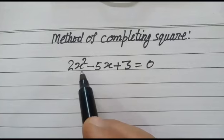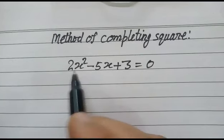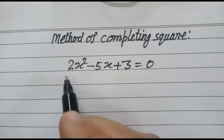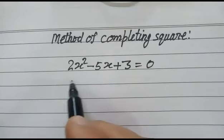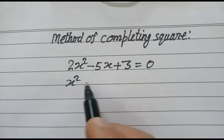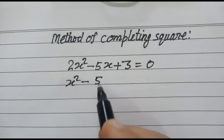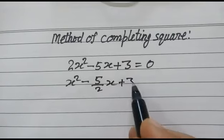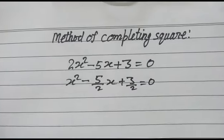As we know, 2x² is not a complete square. First, we will try to make it a perfect square in the first term. So we will divide the whole equation by 2. We get x² minus 5/2 x plus 3/2 is equal to 0.